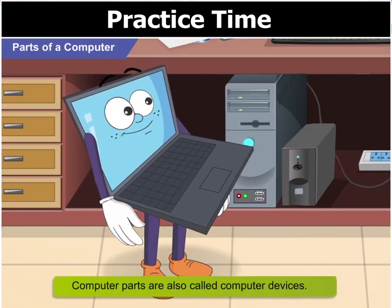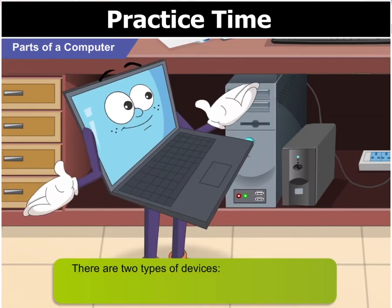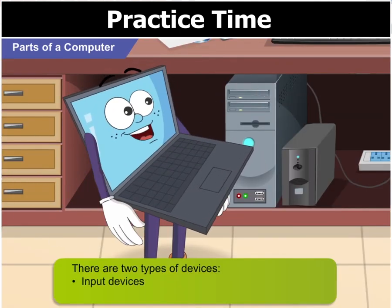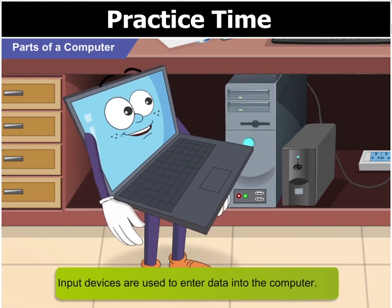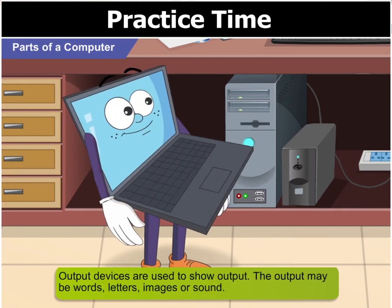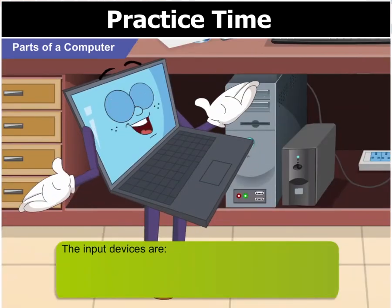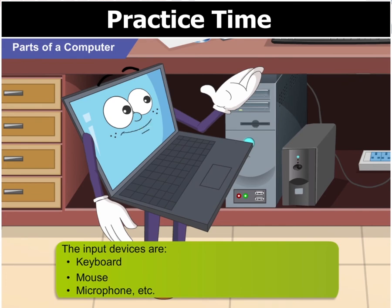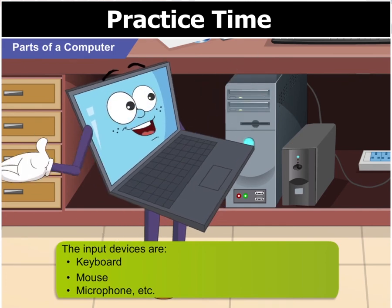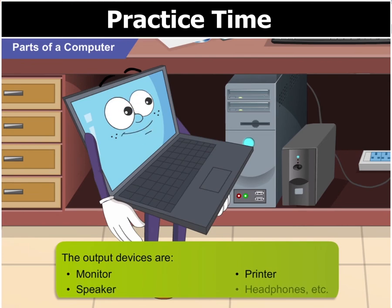These devices may be either input devices or output devices. Input devices are used to enter data into the computer, while output devices are used to show output. Parts like the keyboard and the mouse are input devices, while the monitor is an output device. A microphone is also an example of an input device. On the other hand, printers, speakers and headphones are output devices.